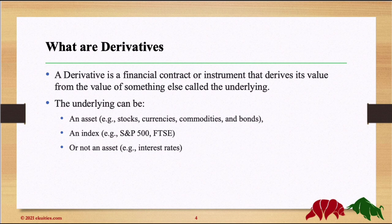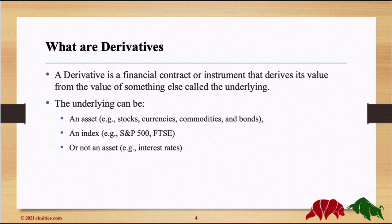The first thing on our menu today is Derivatives. A derivative is a financial contract or instrument that derives its value from the value of something else, which is called the Underlying. The underlying could be an asset like stock, currencies, commodities, bonds, an index like the S&P or the FTSE, or even not an asset like interest rates, as we are going to see in another video.